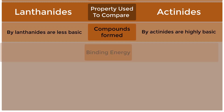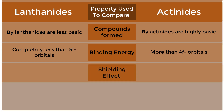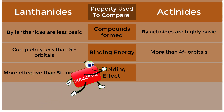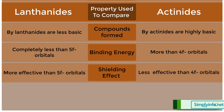Binding energy: Lanthanites have binding energy completely less than 5F-orbitals, while actinites have binding energy more than 4F-orbitals. Shielding effect: Lanthanites have a more effective shielding effect than 5F-orbitals, while actinites have a less effective shielding effect than 4F-orbitals.